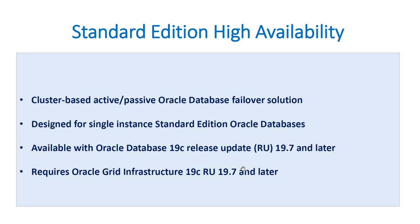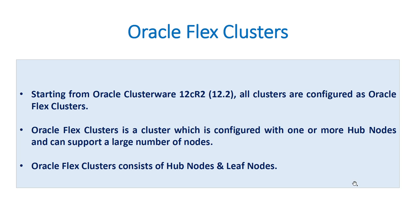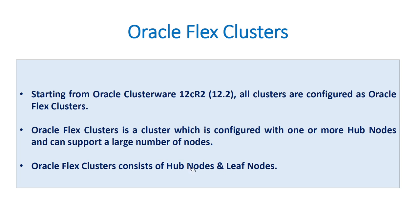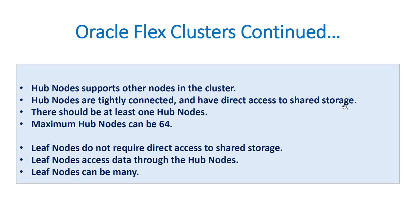Starting from Oracle 12.2, all clusters are configured as Oracle Flex Cluster. Flex Cluster is a cluster configured with one or more hub nodes and can support a larger number of nodes. Oracle Flex Cluster consists of hub nodes and leaf nodes. Hub nodes have direct access to storage — there should be at least one hub node and you can have a maximum of 64. Leaf nodes do not have direct access to storage; they access data through hub nodes. You can have many leaf nodes.